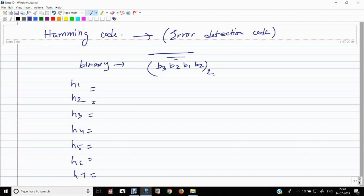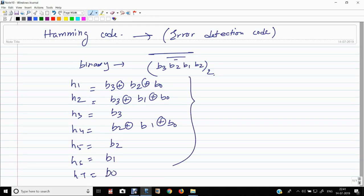This will be b3, b2, b0, b3, b1, b0, b3, b2, b1, b0, b3, b2, b1, b0, b2, b1, b0. You need to remember this formula.